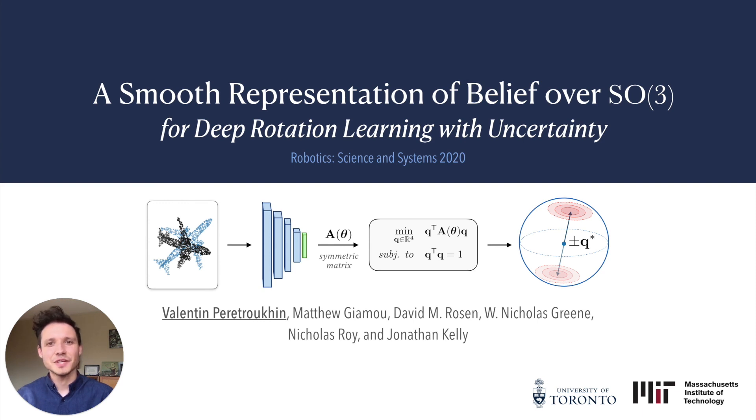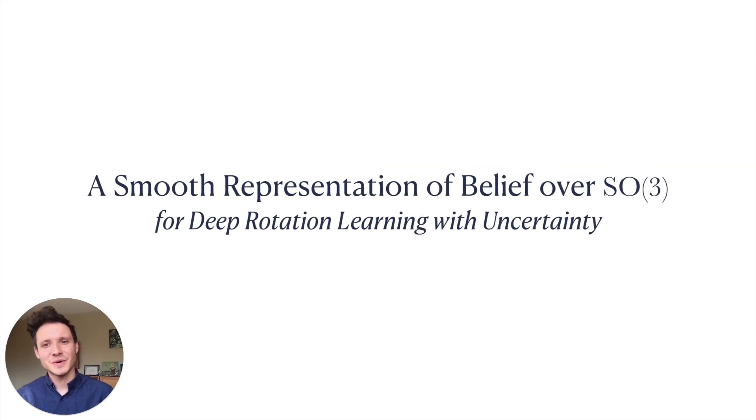Hello, my name is Valentin Peretroukhin and on behalf of my collaborators at the University of Toronto and MIT, I'd like to present our work entitled A Smooth Representation of Belief Over SO3 for Deep Rotation Learning with Uncertainty. That is a mouthful, so I'd like to unpack what an SO3 representation is, what it means for it to be smooth, what makes a representation a belief, and why these properties matter for learning.